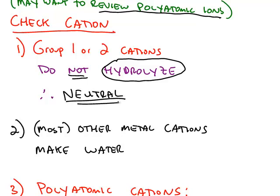If you have any other metal on the periodic table, and for this class we're not going to go into the exceptions, if you find any other metal, for example a transition metal like iron, those metal cations make the water acidic.